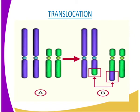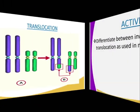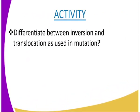The fourth type of chromosomal mutation is translocation. This occurs when a section of one chromatid breaks off and becomes attached to another chromatid, but of the non-homologous pair, as you can see from our diagrammatic representation on screen. Translocation therefore involves the movement of genes from one chromosome to a non-homologous chromosome.